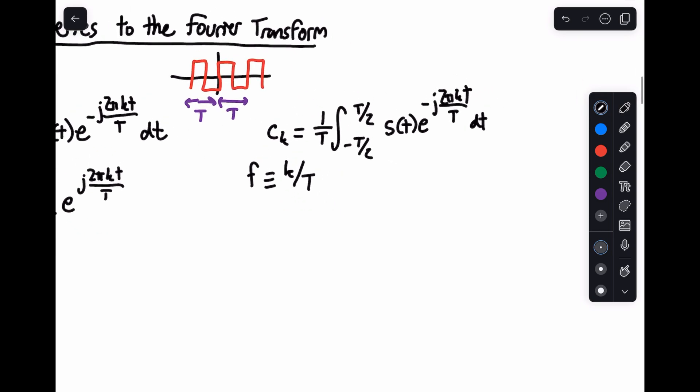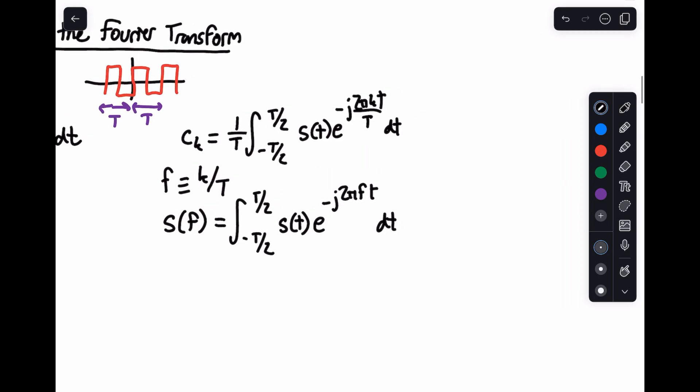And as a result, we can write a function of f. We have S(f) is going to equal the integral from minus T over 2 to T over 2 of s(t), and then just substituting in f for k over T, e to the minus j 2π ft, dt. And notice how this equals T times c sub k. That's going to come in handy in a little bit. So for now, let's just let S(f) be this particular value.